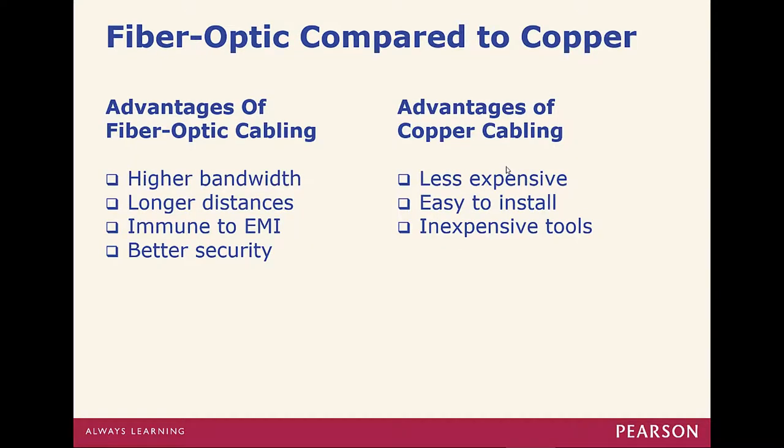Advantages of fiber include higher bandwidth, better distance, and immunity to EMI since there's no electricity, and also security. Advantages of copper include ease of use, lower cost, and widely available tools.